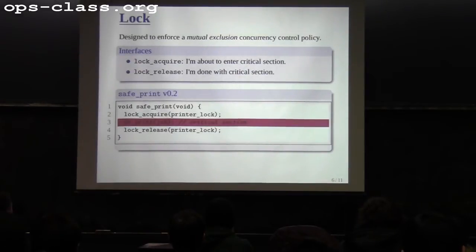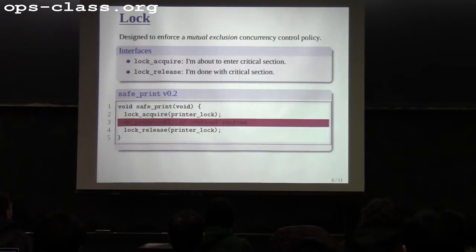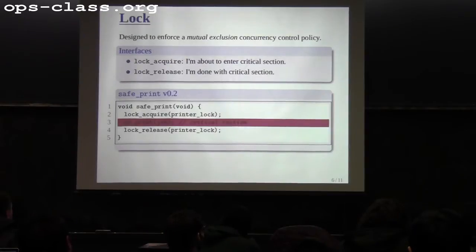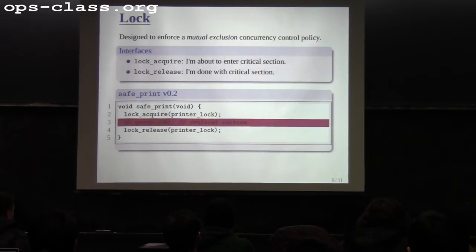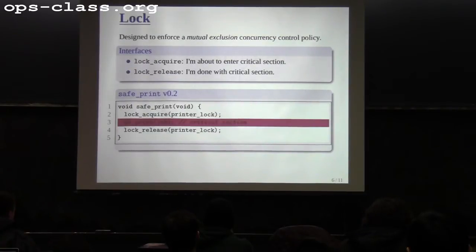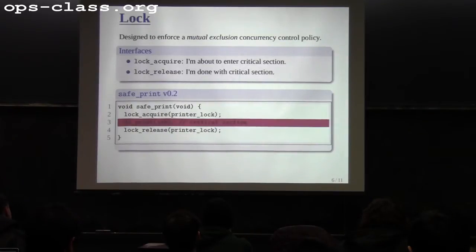Here's the second version of the safe print. Instead of just doing the print, I first call lock acquire. When I reach line three, I know I'm the only person using the printer. Any further users will be blocked at line two waiting for lock acquire. Once I'm done, I release the lock, and then somebody else can continue with the printer.